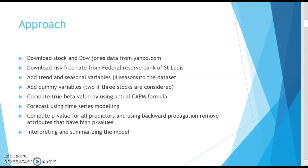This is the approach we will be following. We will be downloading stock and Dow Jones data from Yahoo Finance, and the risk-free rate from the Federal Reserve Bank of St. Louis. Once all the data has been downloaded, we will add additional variables like the trend variable and seasonal variables to check whether there is seasonality with respect to the volatility of the stock. We will be adding dummy variables depending upon the total number of stocks. Since we are using the market return for three stocks, we will use two dummy variables and the third stock will be the base value.